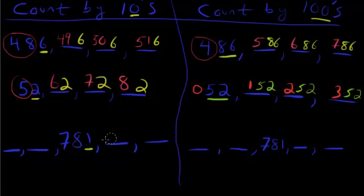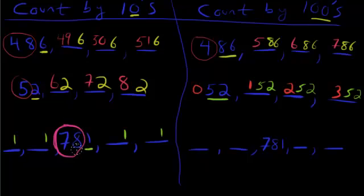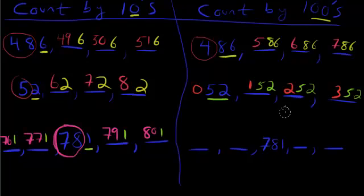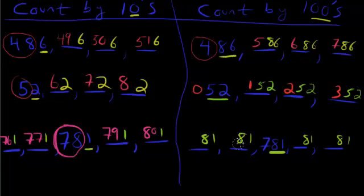Last one: 781 counting by 10s. Hold on to the 1. Everything to the left changes — that's both the 7 and the 8, which is 78. So 78 becomes 79, then 80 going forward, and 77 then 76 going backwards. Now 781 counting by 100s: hold on to two numbers, so 81 stays. The only thing that changes is the 7: it becomes 8, then 9 going forward, and 6, then 5 going backwards.